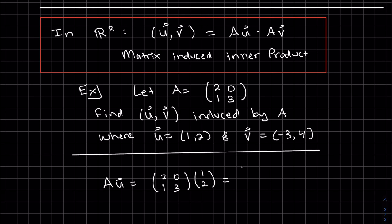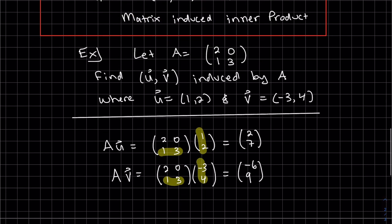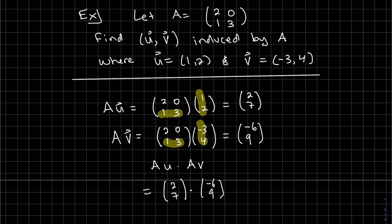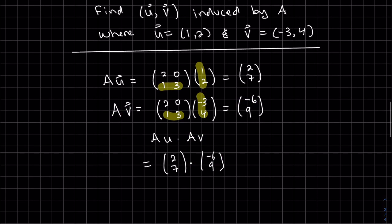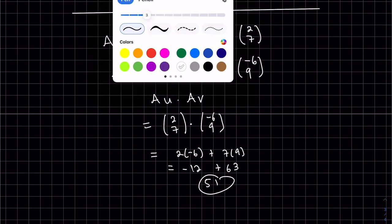So let's find those first. Multiply those. Dot product. So what we have here is Au is 2, 7. Av is minus 6, 9. We take the dot product of those two, and that's our answer.